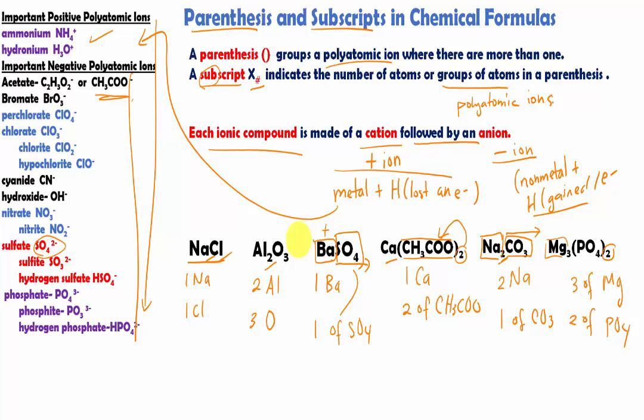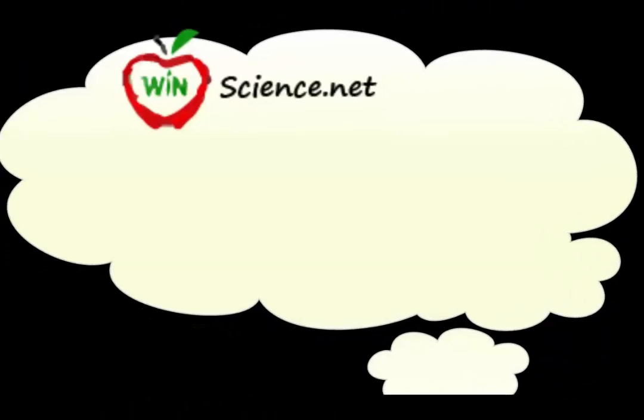Again, the hardest part is to realize that the first element will always be the cation, and whatever comes after the cation will be the anion. We'll see you next time. Bye.